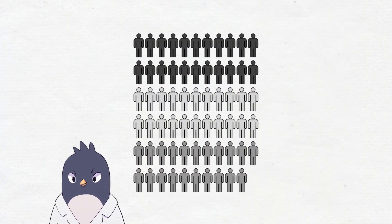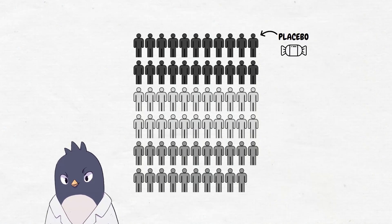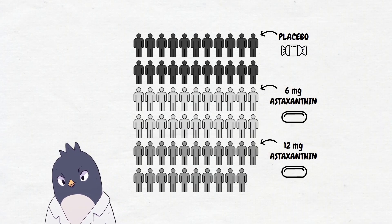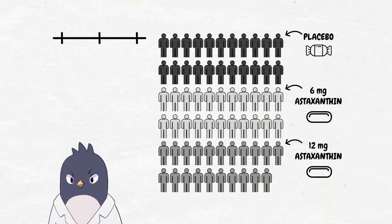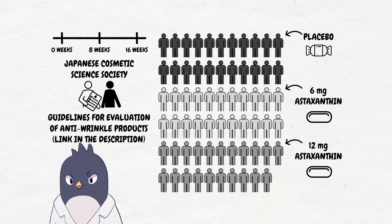For the clinical portion of the study, they randomized 65 people into three groups and gave them either placebo, 6 mg of astaxanthin, or 12 mg of astaxanthin. They took a series of measurements at 0, 8, and 16 weeks and used some standardized guidelines for evaluating anti-wrinkle products.